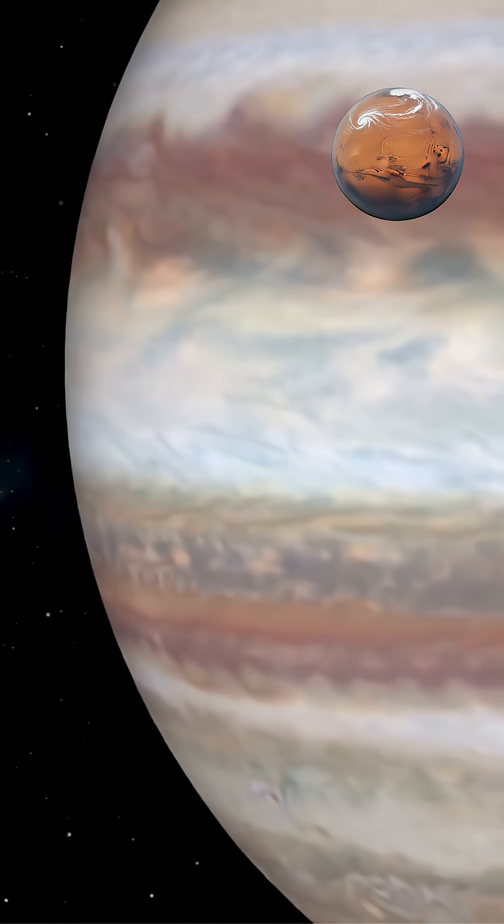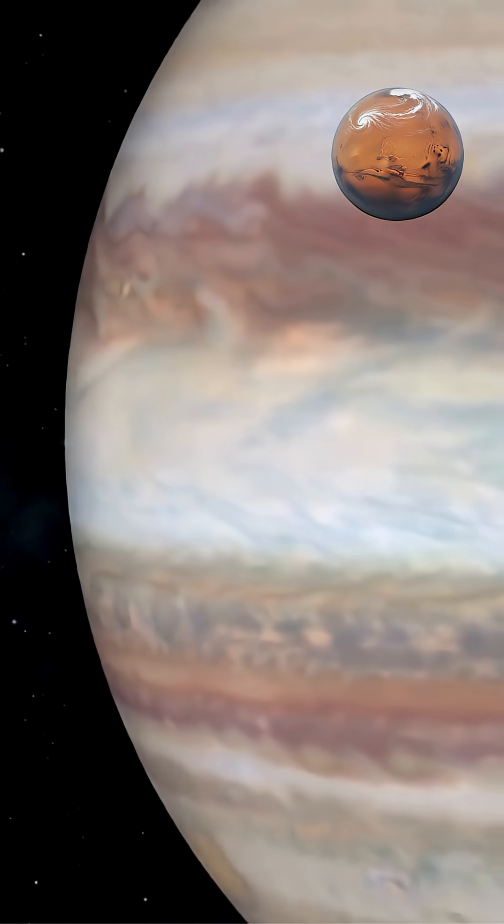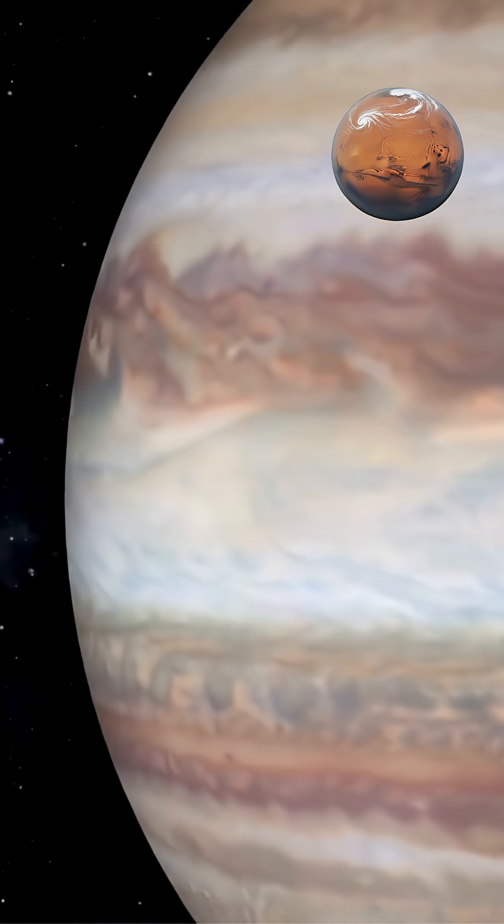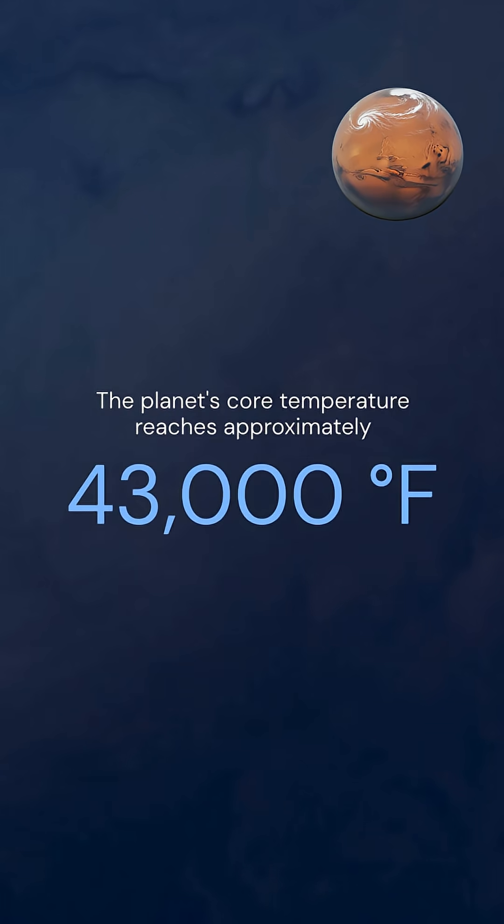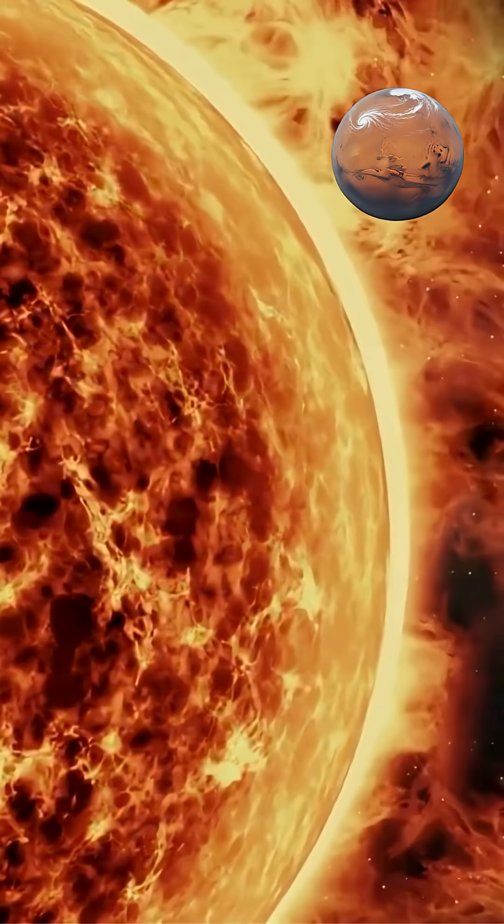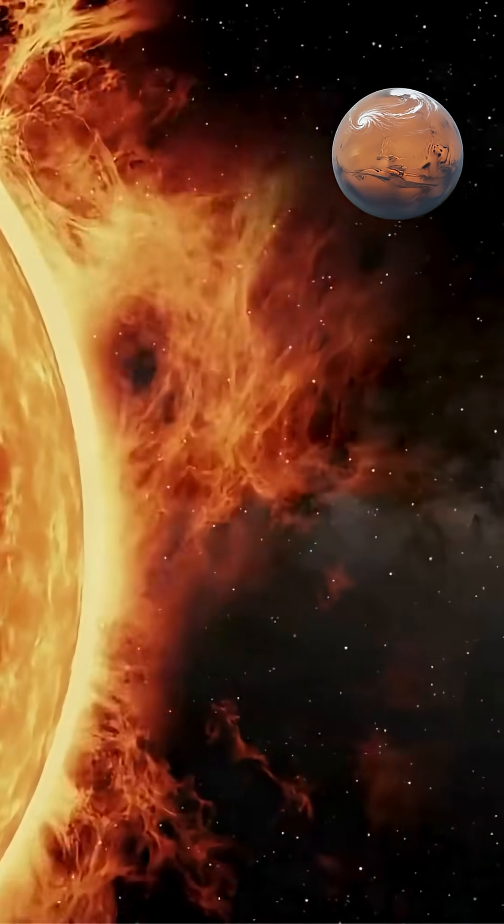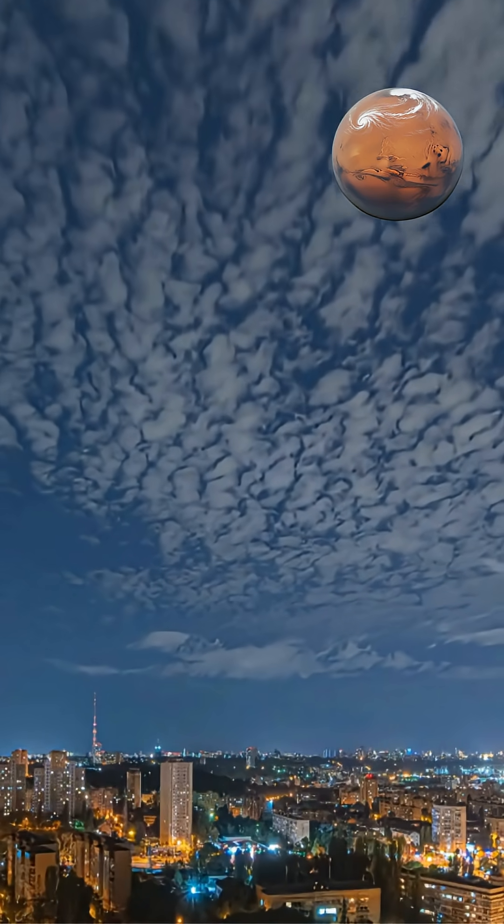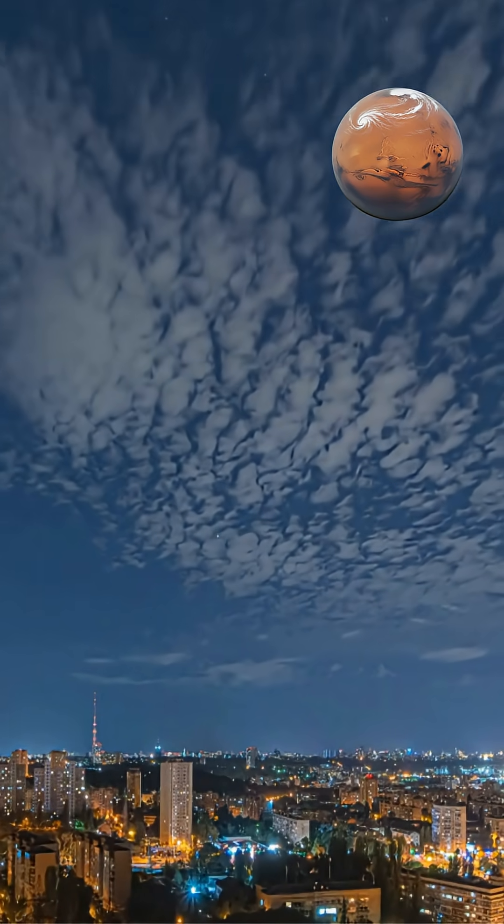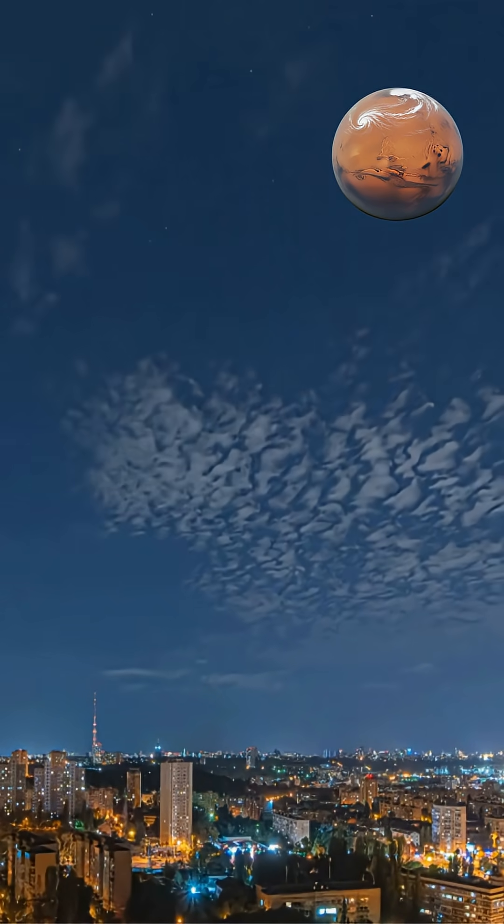Jupiter radiates about twice as much energy into space as it receives from the Sun. The planet's core temperature reaches approximately 43,000 degrees Fahrenheit, hot enough to power violent atmospheric storms and maintain the Great Red Spot, a hurricane-like storm larger than Earth that has raged for at least 350 years.